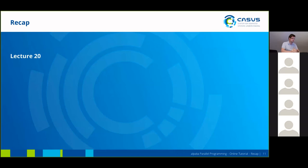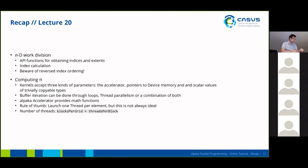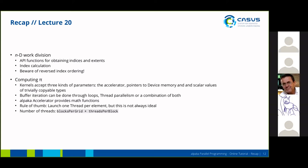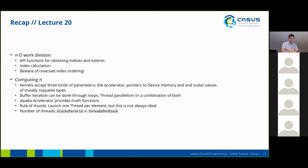On Wednesday we expanded on that and looked at work division in multiple dimensions. We've seen the API functions for obtaining indices and extents, and how to calculate your own indices if needed. You also have to be aware of index reordering — it's a bit counterintuitive, but it matches the C multidimensional array convention: if you have multiple dimensions, the last dimension comes first. So in a 2D grid, for example, you would first index the y-index and then the x-index.